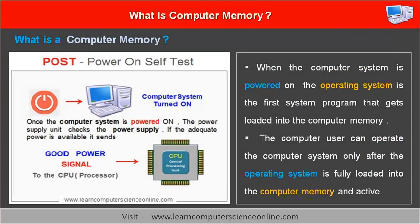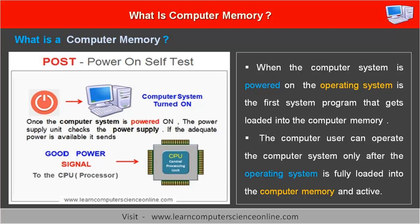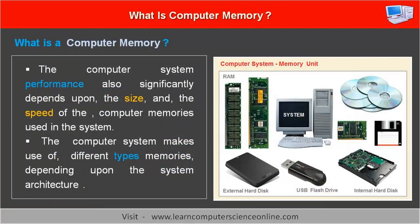When the computer system is powered on, the operating system is the first system program that gets loaded into the computer memory. The computer user can operate the computer system only after the operating system is fully loaded into the computer memory and active. The computer memory is an essential component of every computer system. The computer system performance also significantly depends upon the size and the speed of the computer memories used in the computer system.